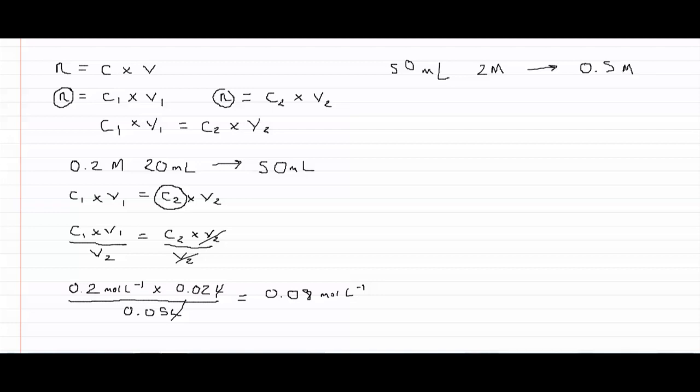So the question is how much water do we need to add to the solution to dilute it from 2 molar to 0.5 molar. So then we come back again to our expression C1 times V1 equals C2 times V2.